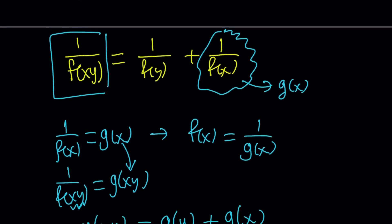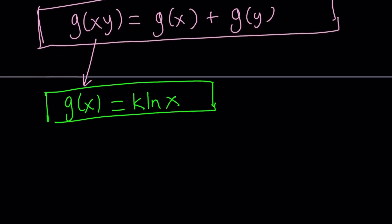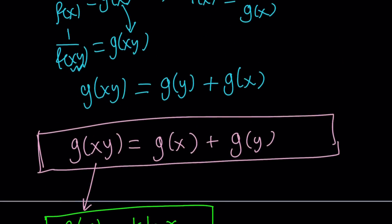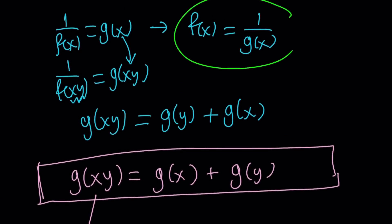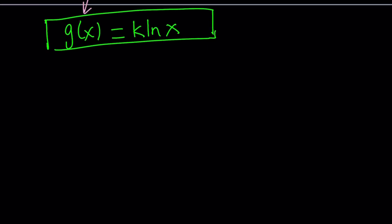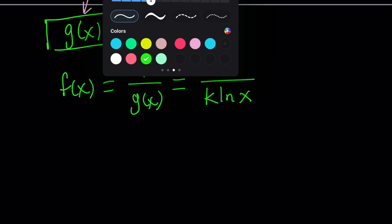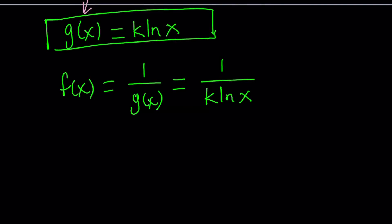So let's go ahead and find the solution for f of x. And how would that work? We know that f of x can be written as 1 over g of x. So from here, f of x can be written as 1 over g of x. Remember, we talked about this before. And that will be 1 over k times ln x. But remember, k is a constant. So can I not replace 1 over k with something else?